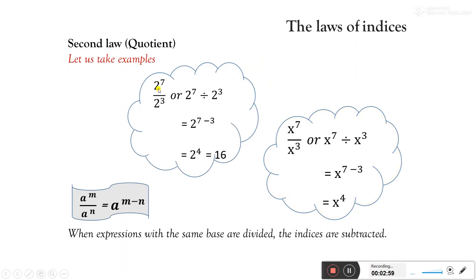The second law is the Quotient Law. For example, 2 to the power 7 divided by 2 to the power 3: we have the same base 2, so powers are subtracted — 2 to the power 7 minus 3 — that equals 2 to the power 4, which equals 16. When we have the same base in division form, we subtract their powers. Next example: x to the power 7 divided by x to the power 3, same base x, so we subtract powers — x to the power 7 minus 3 — that equals x to the power 4.